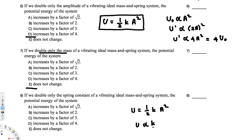Starting with the initial energy U₀, if we double the spring constant it becomes 2k, so the new energy is U' = 2U₀. The potential energy also doubles. So the potential energy increases by a factor of 2 — that's the answer for the third question. I hope you guys find this video helpful, see you next time!